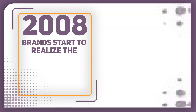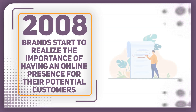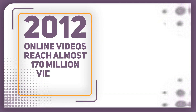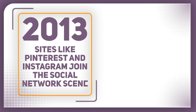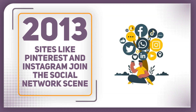In 2008, brands started to realise the importance of having an online presence for their potential customers. Social media marketing became a genuine career option, and many budding young business enthusiasts began heading to university to learn everything about using platforms to persuade target markets to make a purchase. In 2012, online videos reached almost 170 million viewers. In 2013, sites like Pinterest and Instagram joined the social network scene, trying to find innovative ways to allow people to share with friends, family, and the masses. Social media influencers became huge — if they are supporting a particular brand, this can really help persuade customers to move from one brand to another.